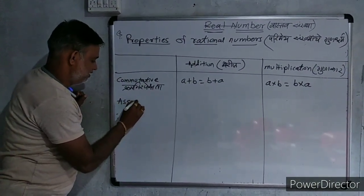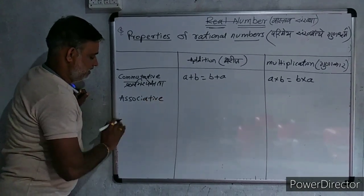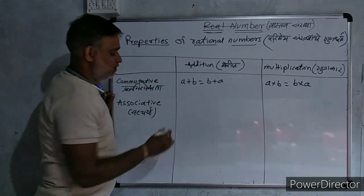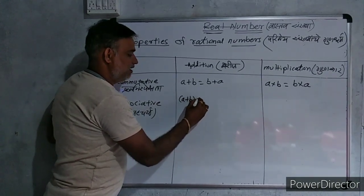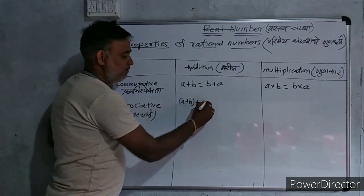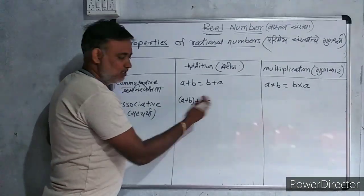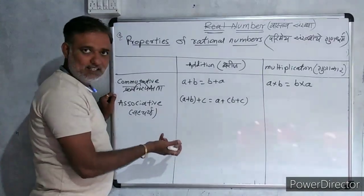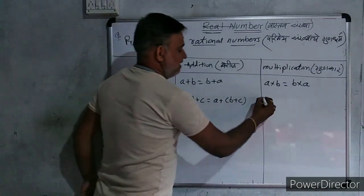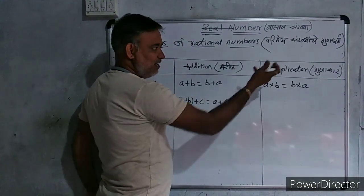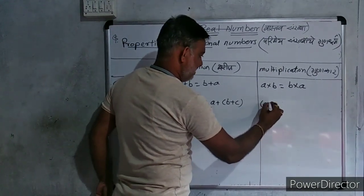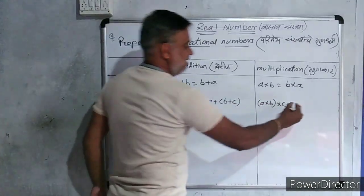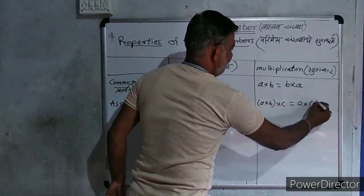Then, Associative. Suppose we write in first bracket (A plus B) plus C. Addition of three numbers. We can also write A plus (B plus C). Their addition is same. In another bracket, we can write: at the place of plus, we have to write multiplication. So, we write (A into B) into C is equal to A into (B into C).